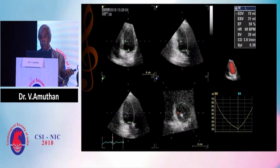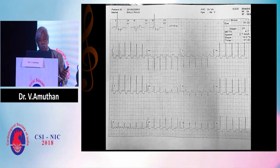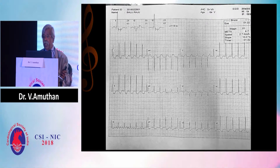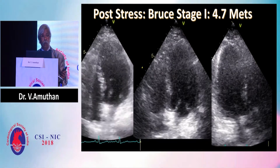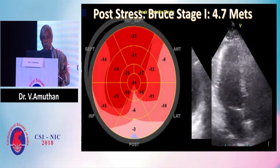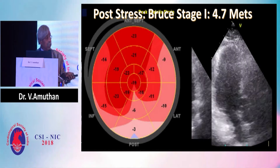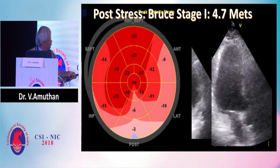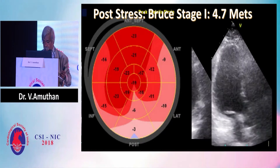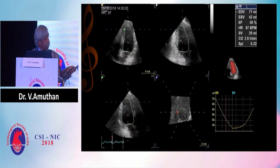His ejection fraction was 56%. This patient completed only the first stage of the Bruce protocol. He had ST segment elevation in aVR and marked ST depression in all leads — you can see this across all the chest leads. On post-stress imaging, you still don't find any change by eyeballing, but strain imaging shows a definite abnormality spread over the anterolateral and anterior territory, which was not present in the initial images. His ejection fraction had fallen to 40%.